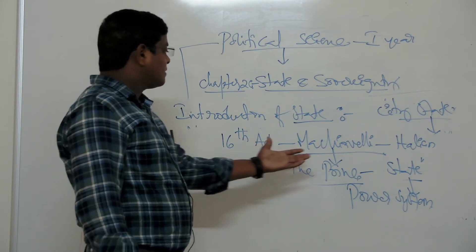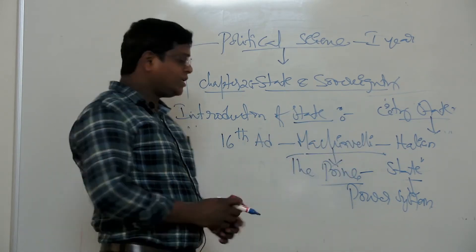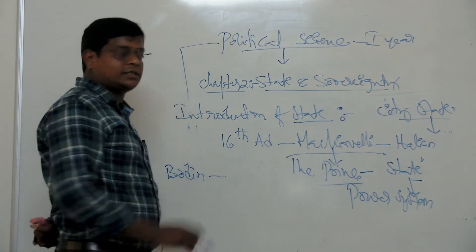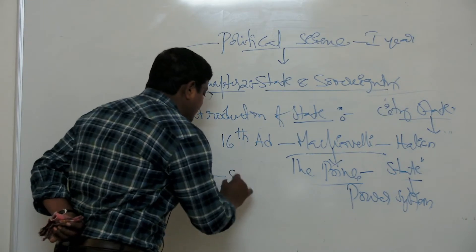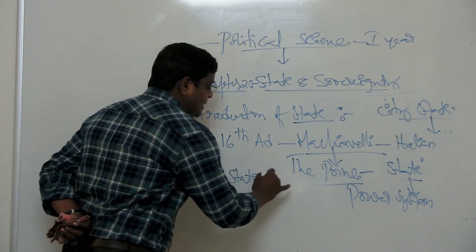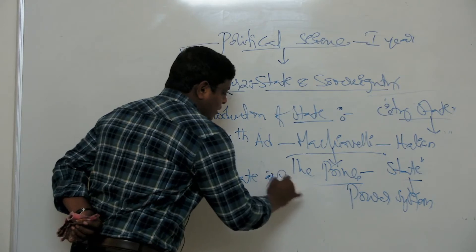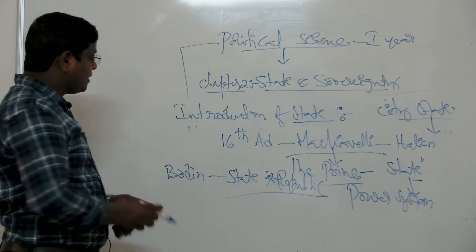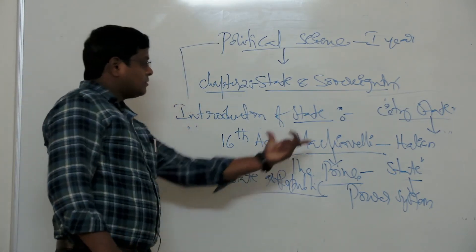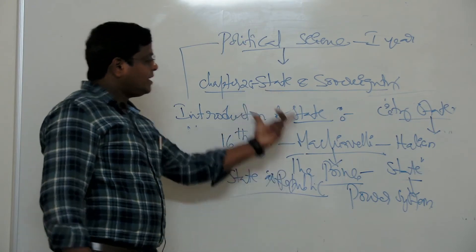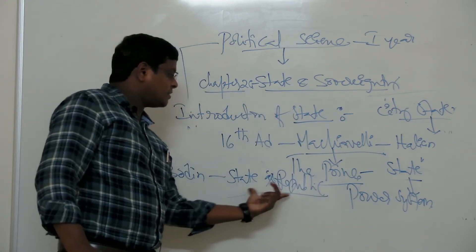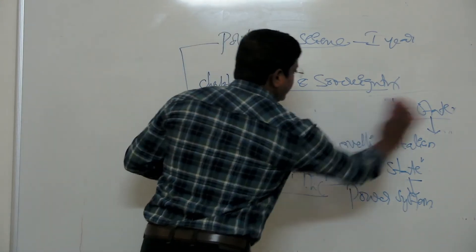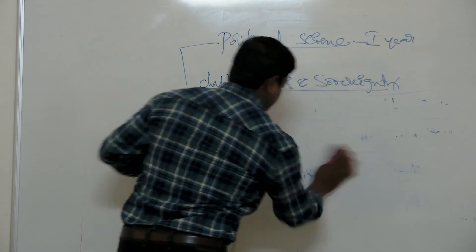Later, many political philosophers used the term 'state' in different ways. Jean Bodin used the term 'state' as 'republic' — state is republic according to Jean Bodin. So whatever the view of the state, they concluded the meaning of state is a power system and republic in the modern sense. Let us go with the meaning of the state.